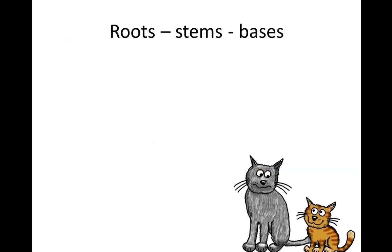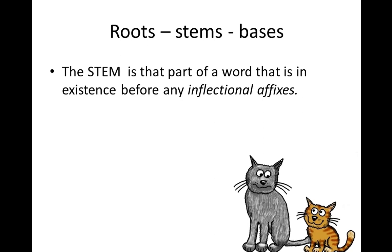Now let's specify what exactly root, stem, and base mean. A root is like 'raiz' in Portuguese — the part of the word you can't change. A stem is the part of a word that exists before any inflectional affixes. For example, if you take off the '-s' from 'blacks,' you have the root or stem 'black.' But when you add the '-s' for plural through inflection, that base form is the stem.